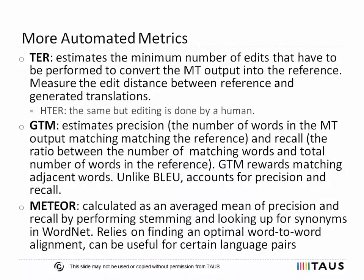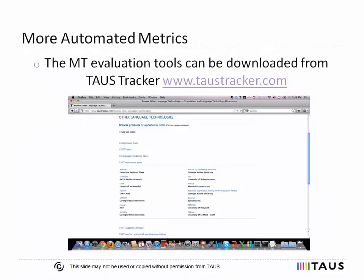Apart from BLEU, GTM, TER, and METEOR, there are many other automatic metrics that have been created in recent years. At the TAOS tracker, a free directory of machine translation, translation memory, and language technology tools, you can find listings for 20 or so automated evaluation metrics in the language technology section. I encourage you to share experiences with the accuracy or usefulness of particular automatic metrics by leaving comments in the TAOS tracker.